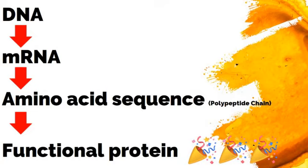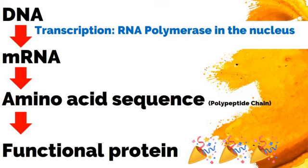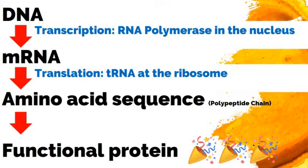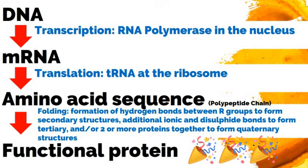An overall summary is that DNA will be transcribed by RNA polymerase in the nucleus. mRNA will be translated using tRNA at the ribosome to form an amino acid sequence, which then is going to fold. When it's folding, it's getting a more complicated structure and a more specific shape. That shape is going to be held in place by hydrogen bonds between the R groups on amino acids to form a secondary protein structure. That secondary structure is going to twist around and get bonded some more using ionic and disulfide bonds to form a tertiary, and if you have more than two proteins, a quaternary structure — and there you have a functional protein.